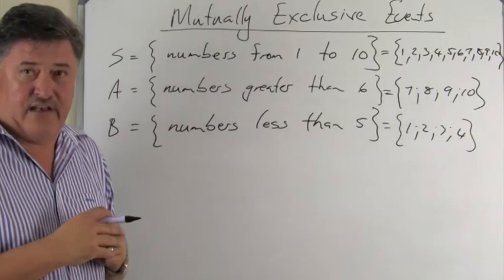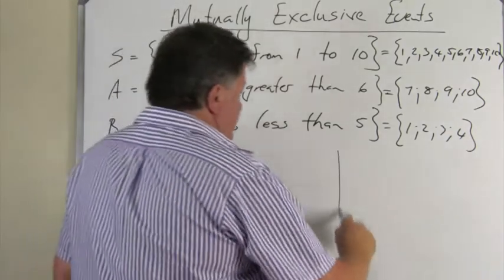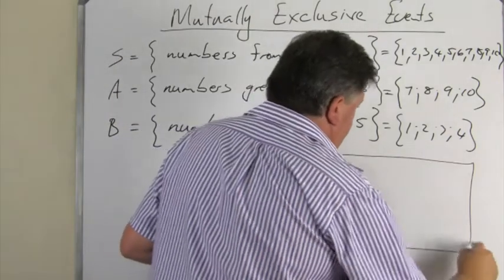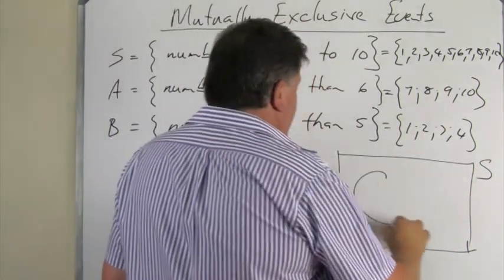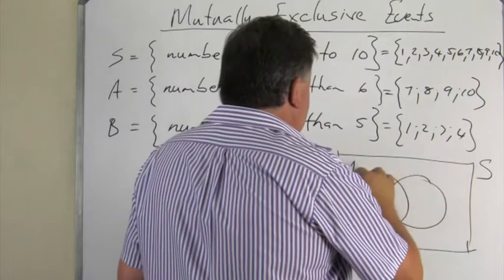Let's represent this in a Venn diagram quickly. First of all, like we did before, your sample space, now your two events A and B.